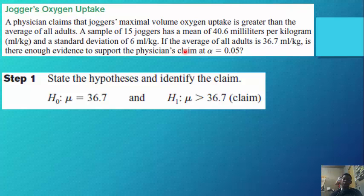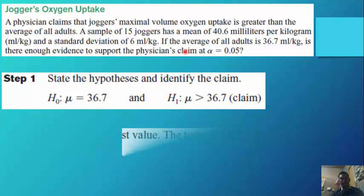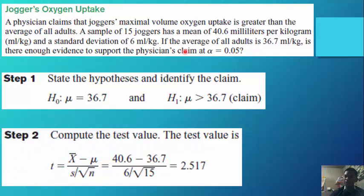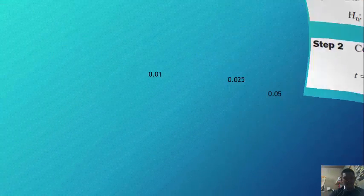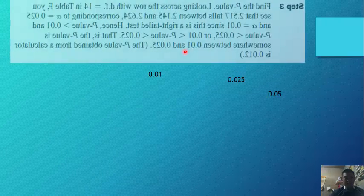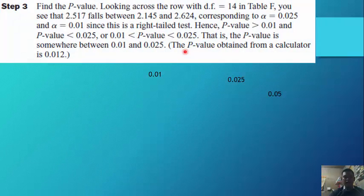Step 1: The null hypothesis is μ = 36.7 and the alternative hypothesis is μ > 36.7. Step 2: Compute the test value by substituting into the formula. We obtain a t-value equal to 2.517.